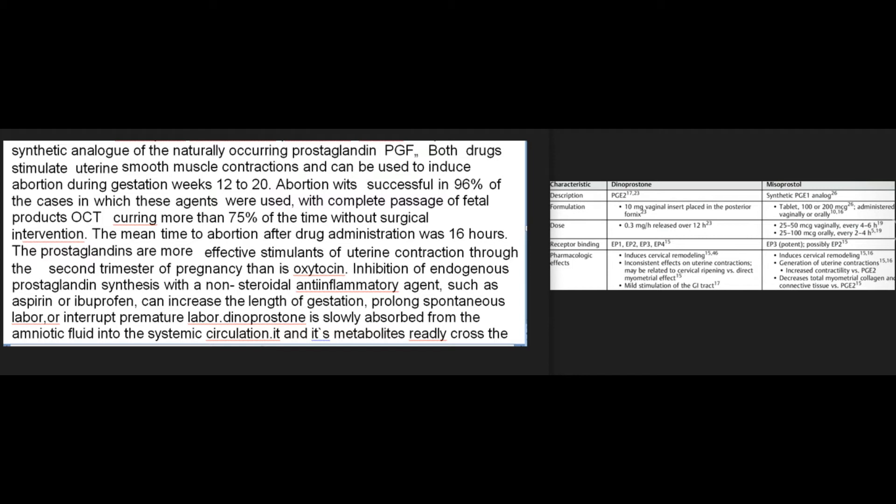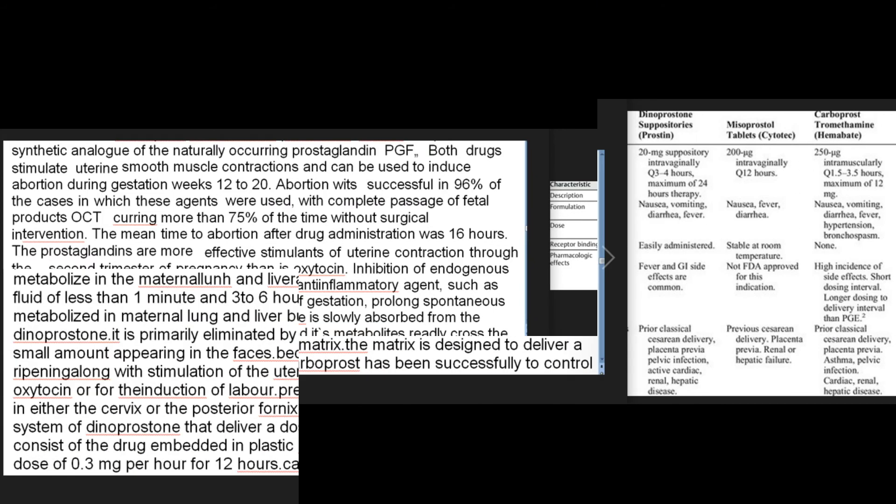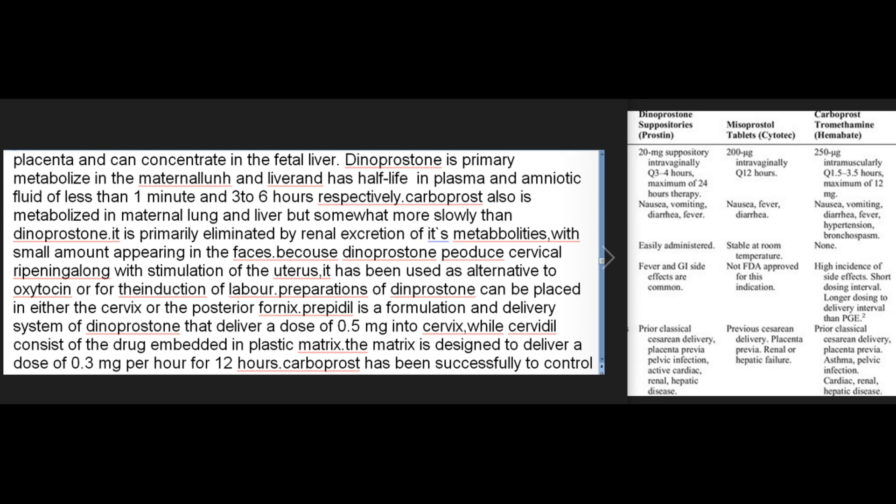The prostaglandins are more effective stimulants of uterine contraction through the second trimester of pregnancy than is oxytocin. Inhibition of endogenous prostaglandin synthesis with a non-steroidal anti-inflammatory agent such as aspirin or ibuprofen can increase the length of gestation, prolong spontaneous labor, or interrupt premature labor. Dinoprostone is slowly absorbed from the amniotic fluid into the systemic circulation; it and its metabolites readily cross the placenta and can concentrate in the fetal liver. Dinoprostone is primarily metabolized in the maternal lung and liver, with a half-life in plasma of less than one minute and in amniotic fluid of three to six hours. Carboprost is also metabolized in maternal lung and liver but somewhat more slowly, and is primarily eliminated by renal excretion of its metabolites.